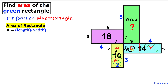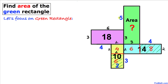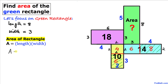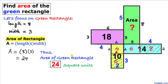Finally, let's focus on the green rectangle. This side length is five plus three, which equals eight. So the length of the green rectangle is eight and the width is three. Therefore, the area of the green rectangle is eight times three, which is 24 square units. That is our final answer.